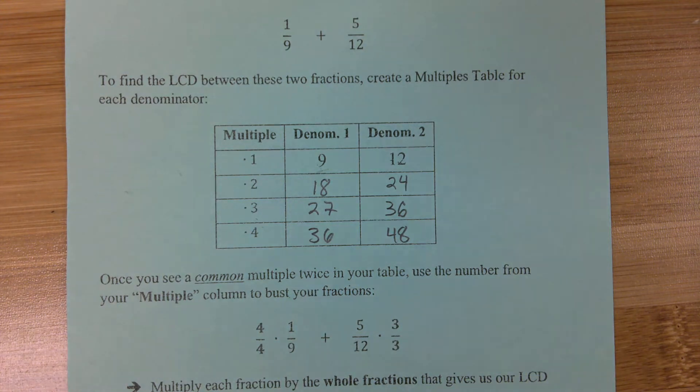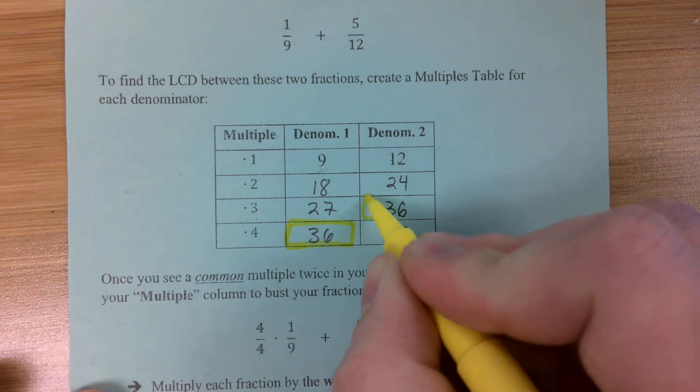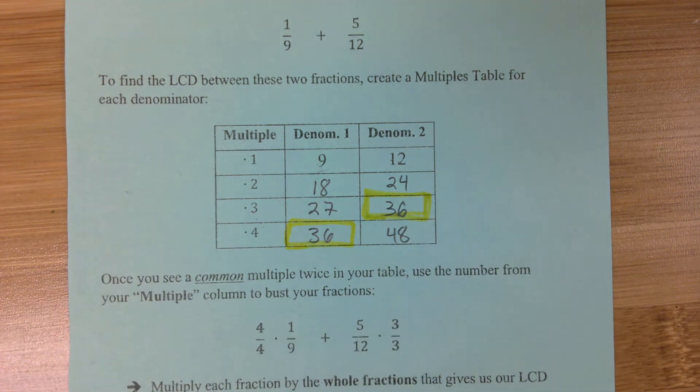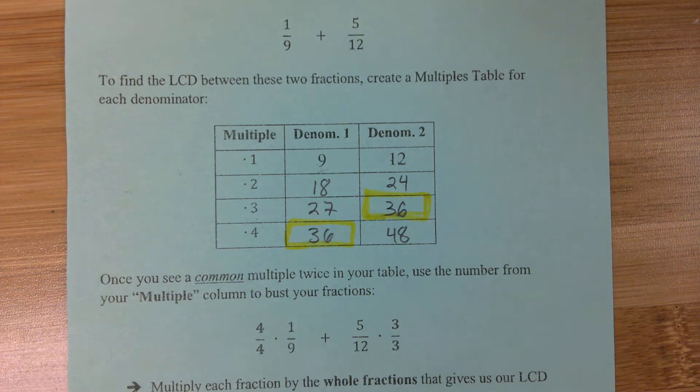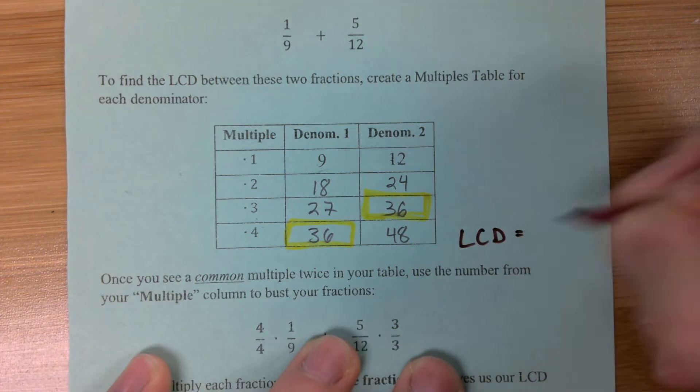So, right there, that's what we want to see. We've got a 36 on the left side column, and we've got a 36 on the right side column. That means that our lowest common denominator is what? 36.